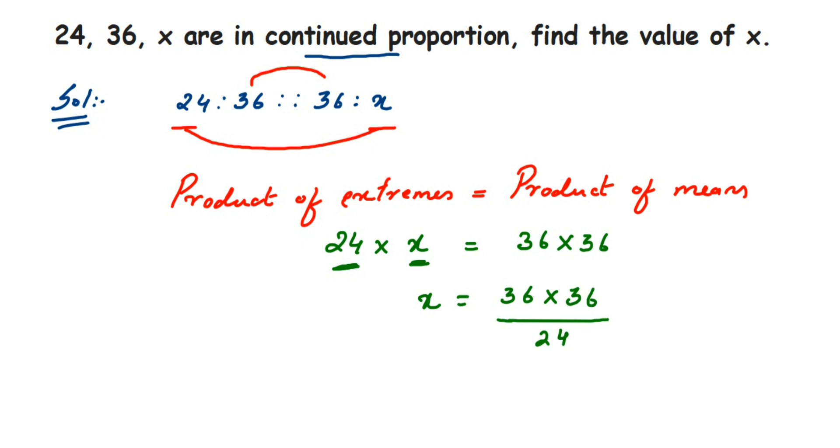12 twos are 24, 12 threes are 36. We can cancel 36 and 2 once again in 2 table, so 2 ones are 2 and here 2 eighteens are 36. Now we are left with 3 and 18 in the numerator, so multiply them. 18 times 3 is 54, so therefore we got the x value as 54.